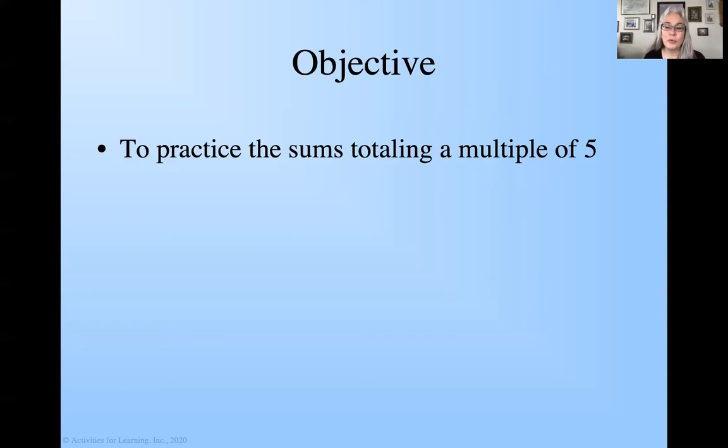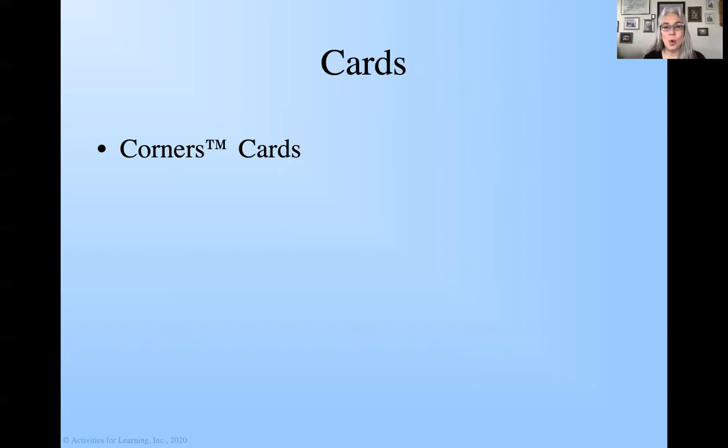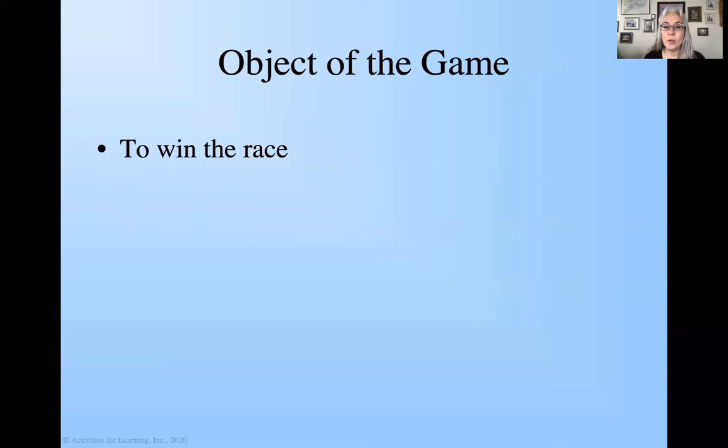The cards that we're going to need today are the Corner Cards, which look like this. You're going to need two to four people to play. Our object of the game is to win the race. There is another winner with this game also, and that's the person that has the highest score.